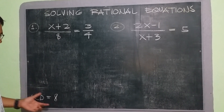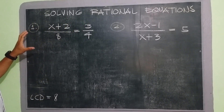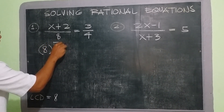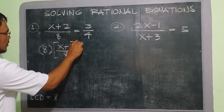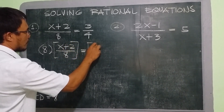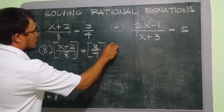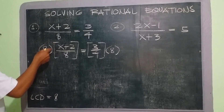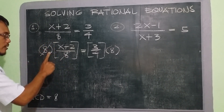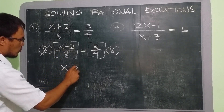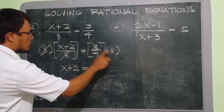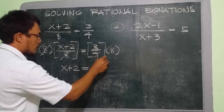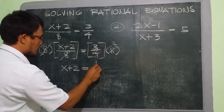To solve this one, we need to multiply the LCD 8 to both sides of our equation. So this is 8 multiplied to x plus 2 over 8, and then we have 3 fourths multiplied by the LCD 8. Next we have to simplify. We can cancel 8 and 8 — 8 divided by 8 is 1, so 1 times x plus 2 gives us x plus 2. That is equal to 3 times 8: divide 8 by 4 to get 2, and 3 times 2 is 6.